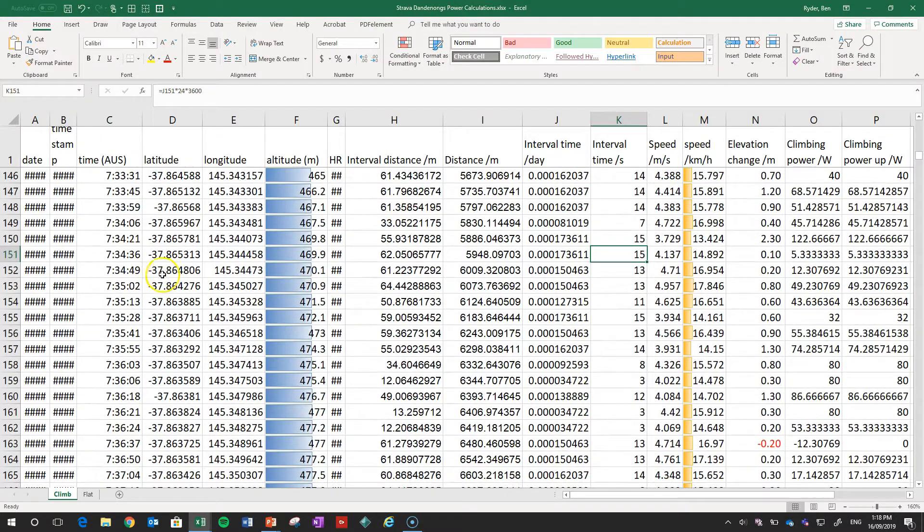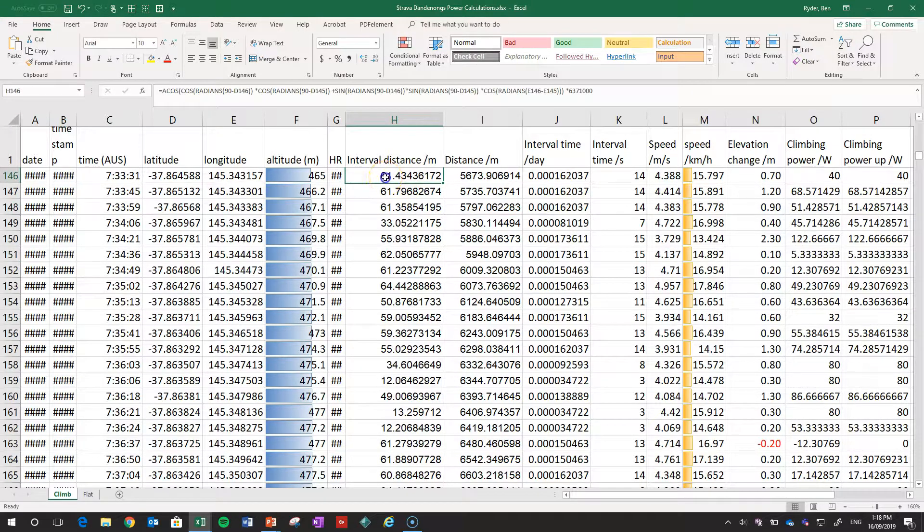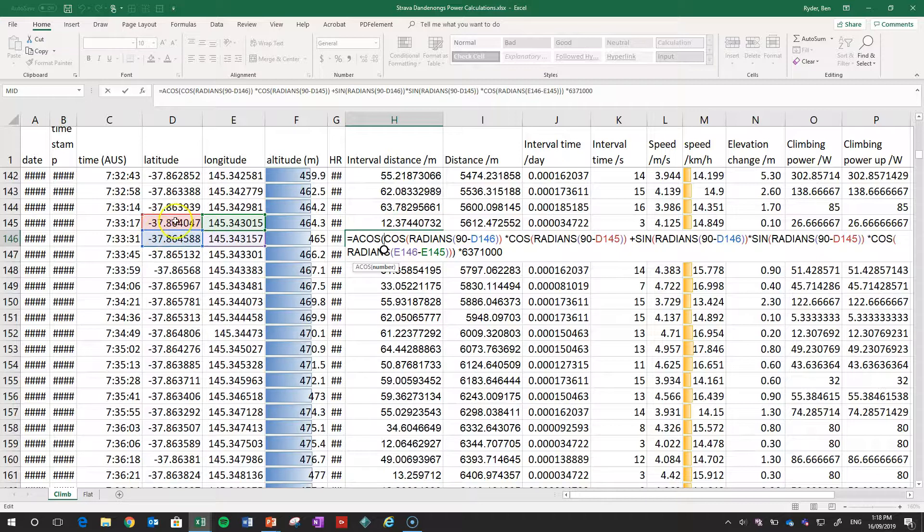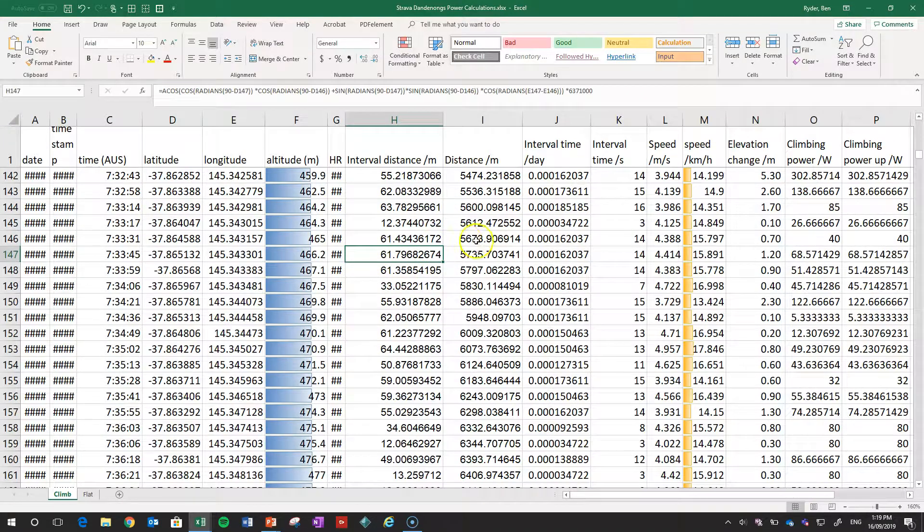So I've just hidden some of those data here but you can see we've got latitude and longitude data. Now the first thing you need to do is calculate the interval distance. It's this complex formula I didn't write, I looked it up. It's a formula to calculate how far in meters I've traveled given the latitude and longitude data and it compares the previous timestamp to the new timestamp of course to know how far I've gone. So that gives me how far I've gone but really what's interesting is the elevation change.